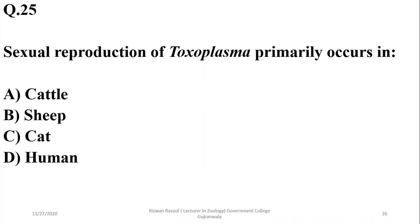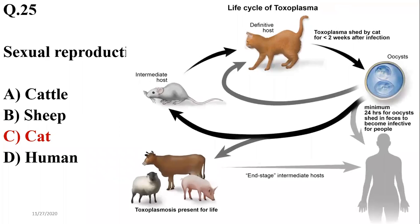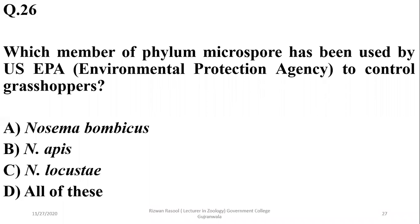Question twenty-five: sexual reproduction of Toxoplasma primarily occurs in the cat. The cat is the definitive or primary host, while an intermediate host may be a rat or another vertebrate. Question twenty-six: the member of phylum Microspora used by the US Environmental Protection Agency to control grasshoppers is Nosema locustae. The correct option is C.